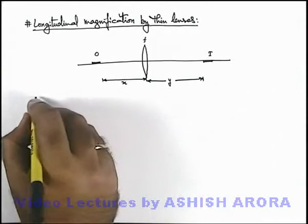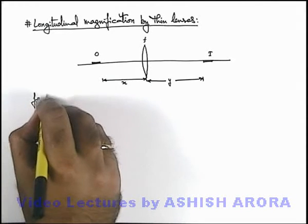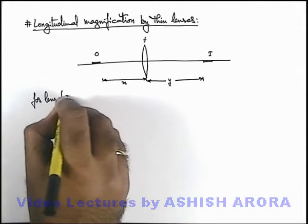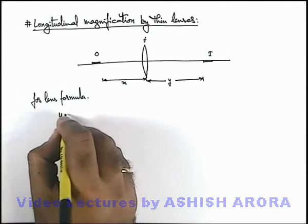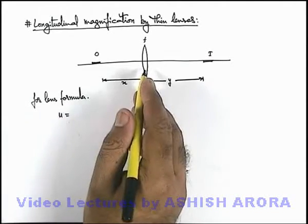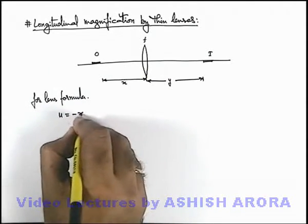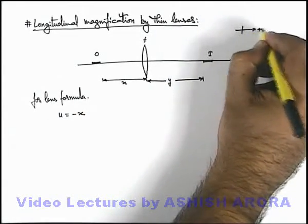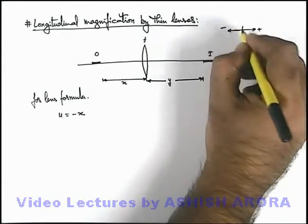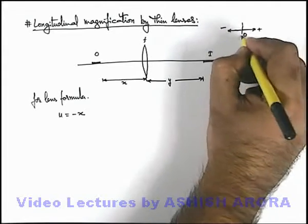In this situation for lens formula, we can write the value of u, the object distance from lens. It can be taken as minus x because here I am taking right side as positive direction and left side as negative direction. We consider the position of lens as origin.